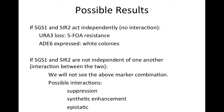If some of our yeast colonies are white and 5-FOA resistant, then SGS1 and SIR2 act independently in the double mutant. If not, SIR2 or SGS1 could be a suppressor or a synthetic enhancer of the other gene. Another possibility is that there is an epistatic interaction between SGS1 and SIR2.